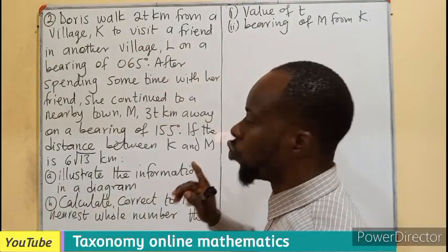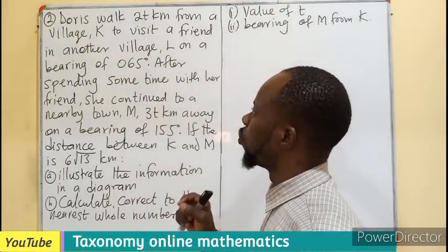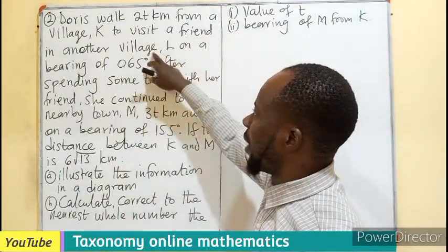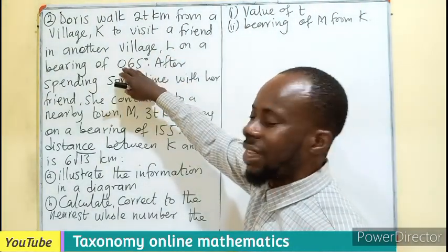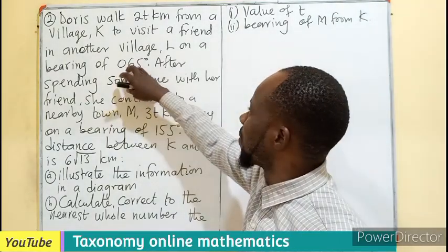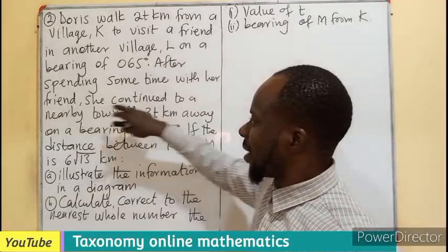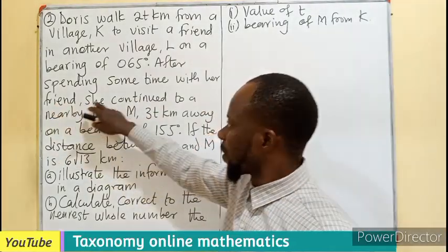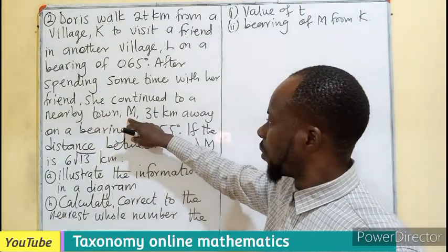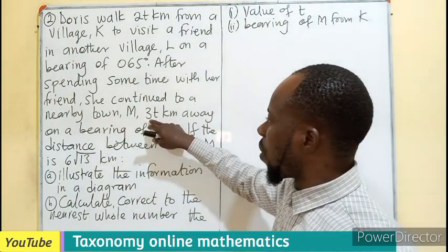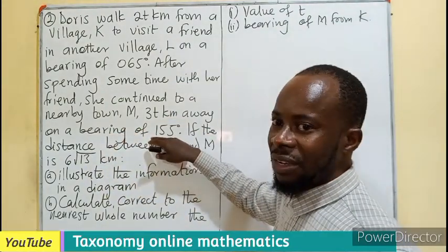So it said, Doris walked 2T kilometers from a village K to visit a friend in another village which is labeled as L on a bearing of 65 degrees. After spending some time with her friend, she continued to a nearby town labeled M with the distance of 30 kilometers on a bearing of 155 degrees.